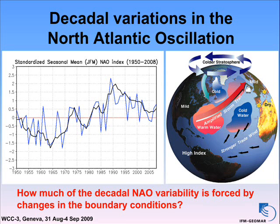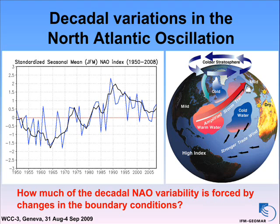In Europe, if there is a strong North Atlantic Oscillation, the weather or the climate in Europe — in Central and Northern Europe — is mild but rainy, and in Southern Europe it's relatively dry.